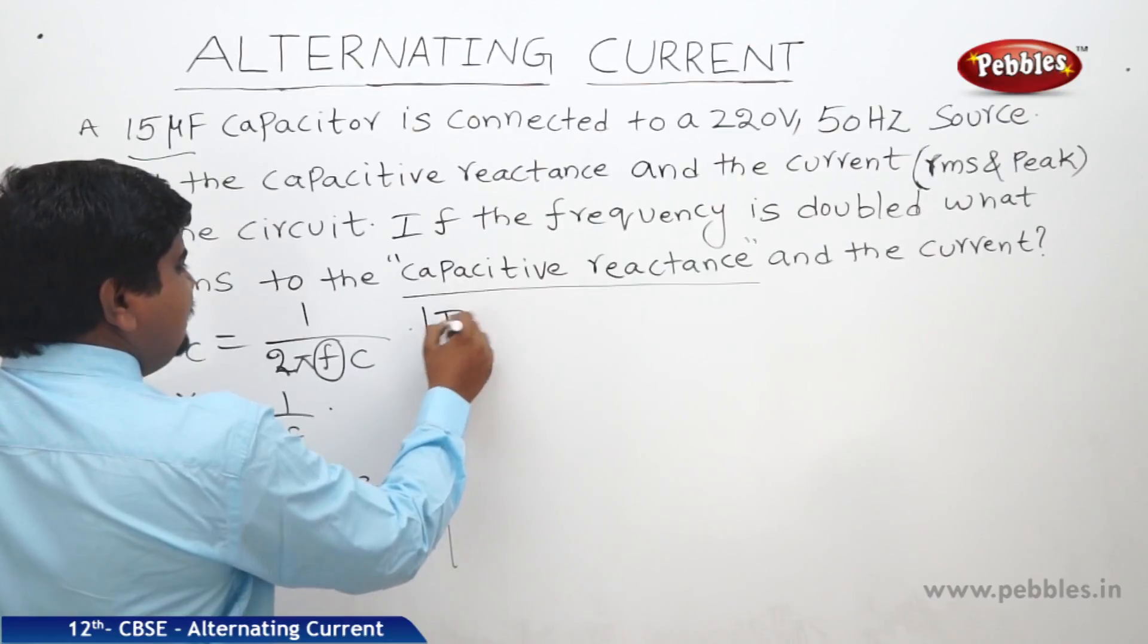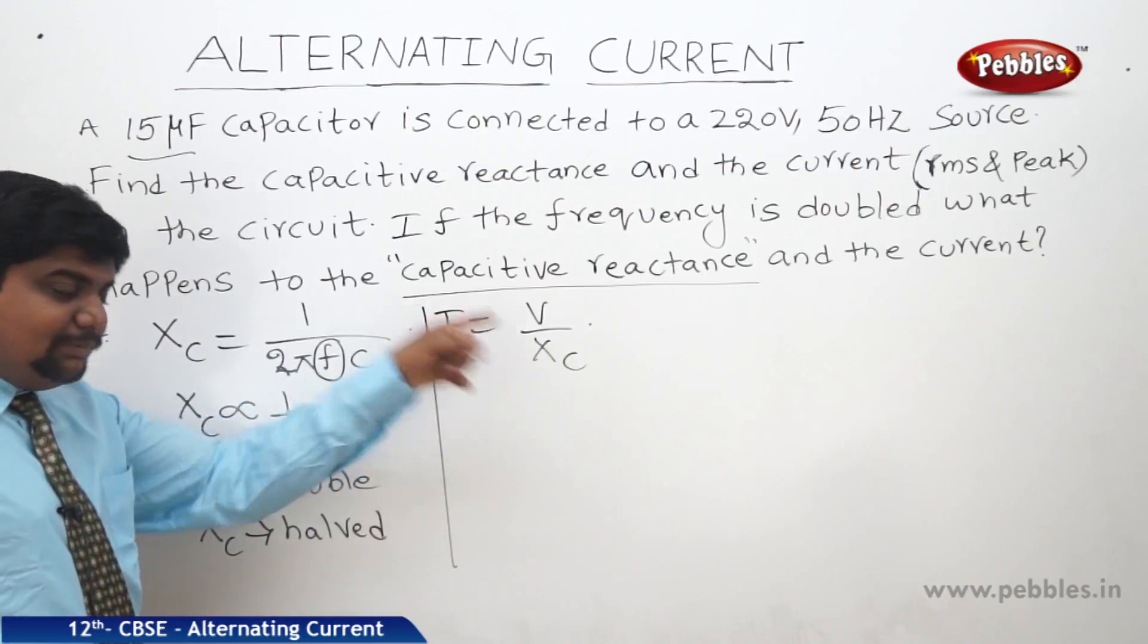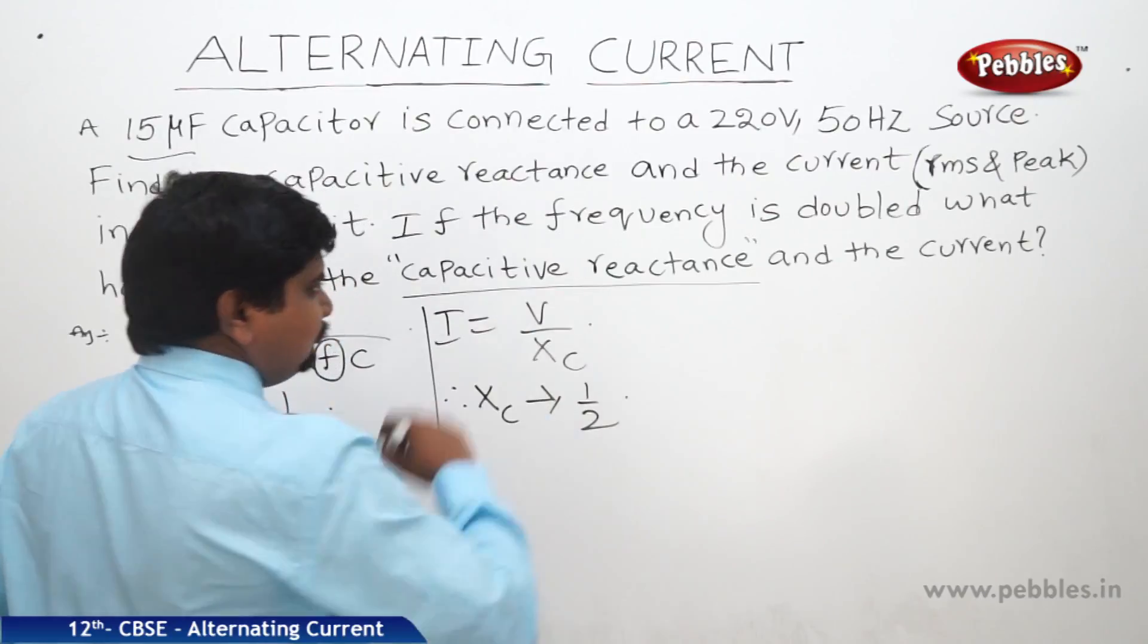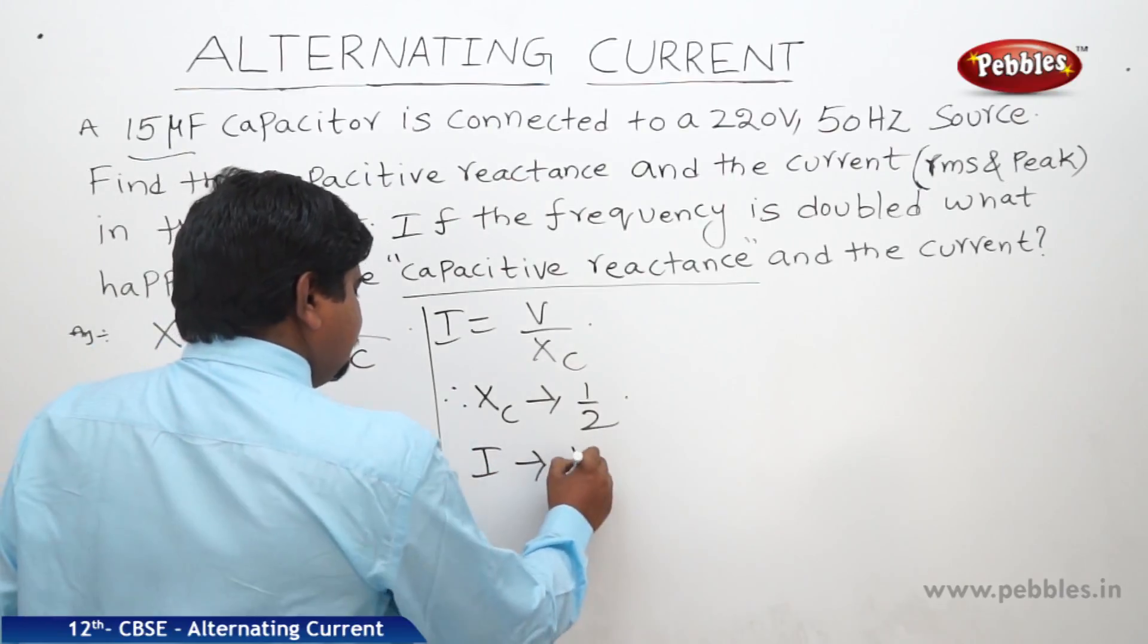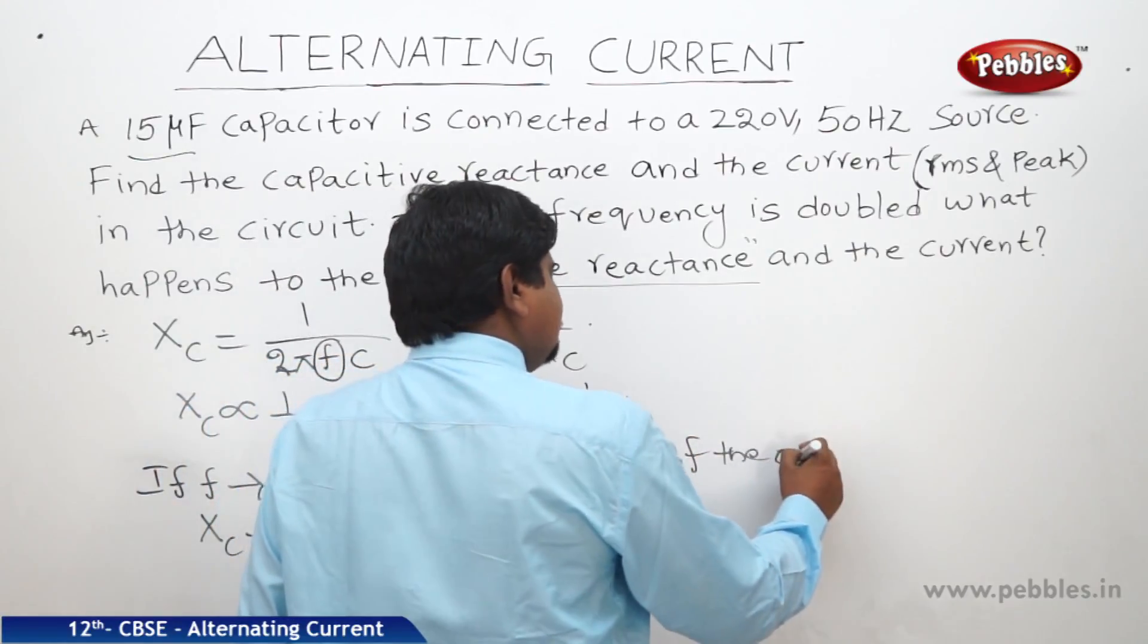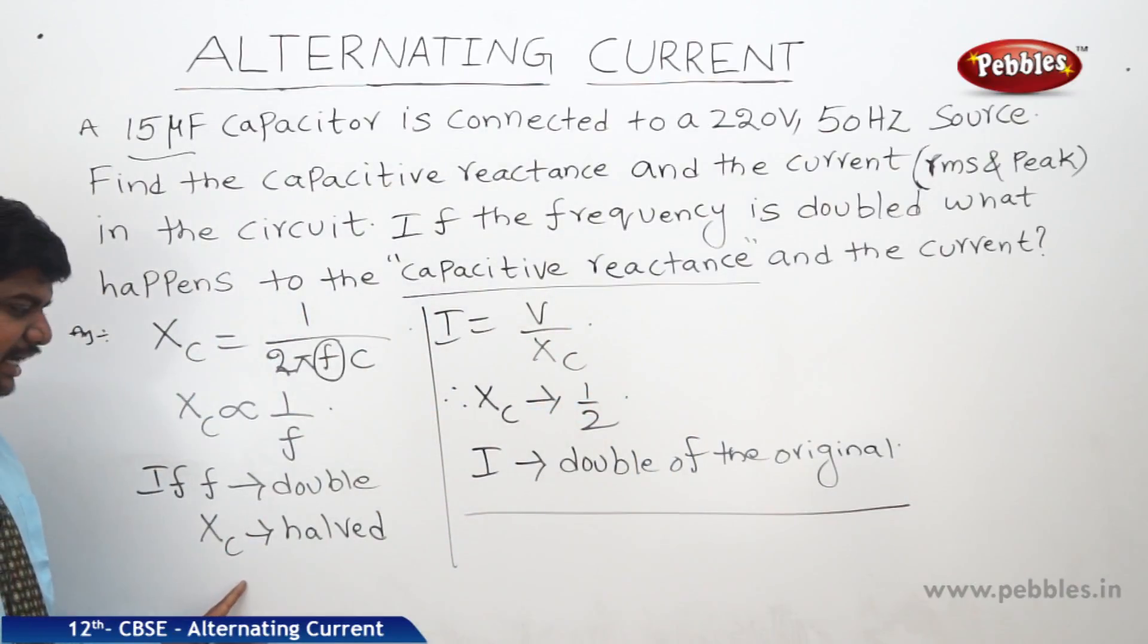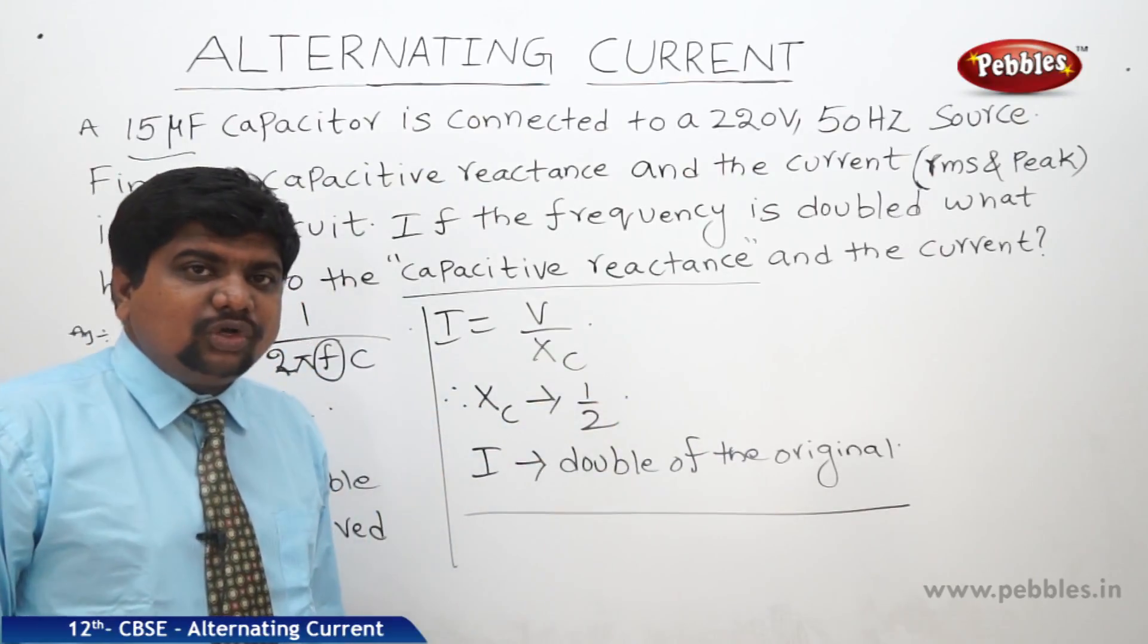What about the current? We got that I equals V by XC. XC becomes half. That means current will become twice. So if XC is half, these two are related, therefore current will become double of the original. So if frequency is doubled, capacitive reactance becomes half and current becomes double of the original.